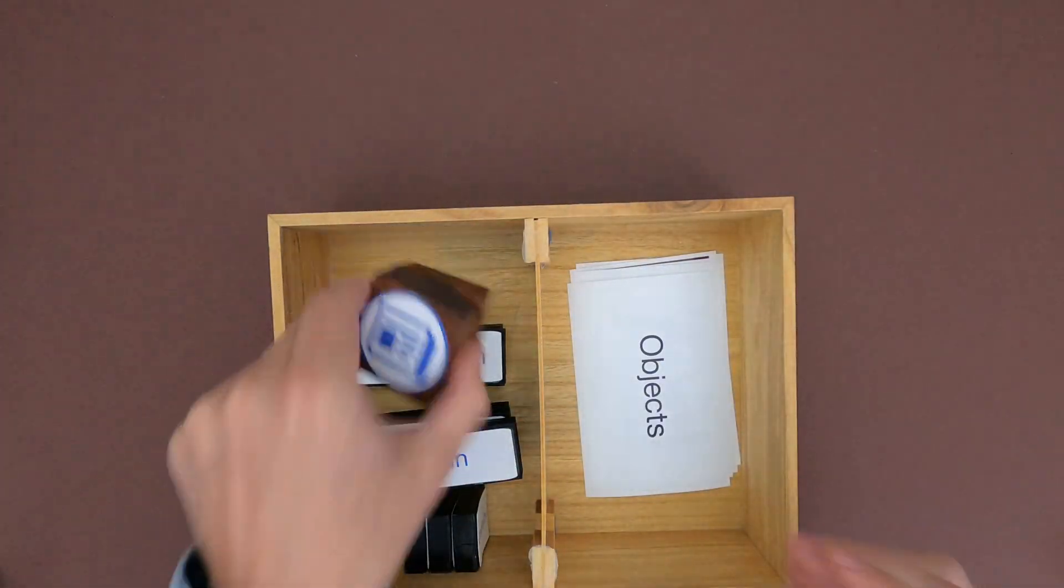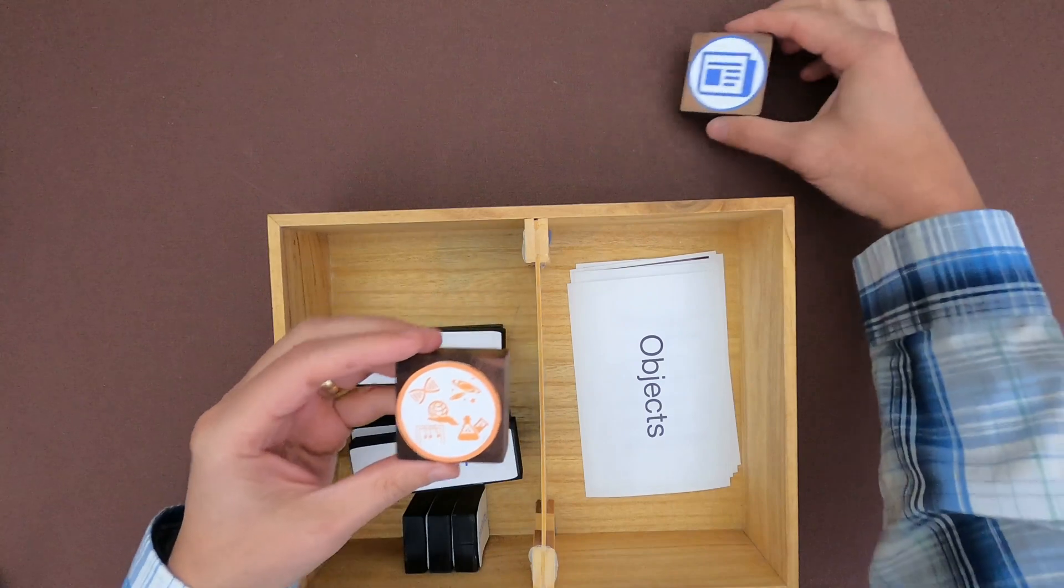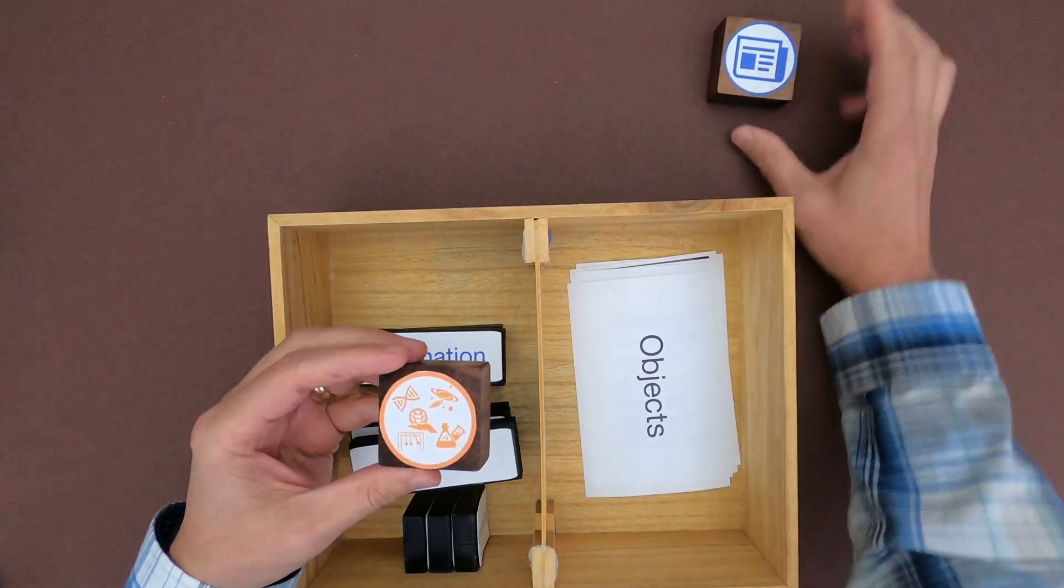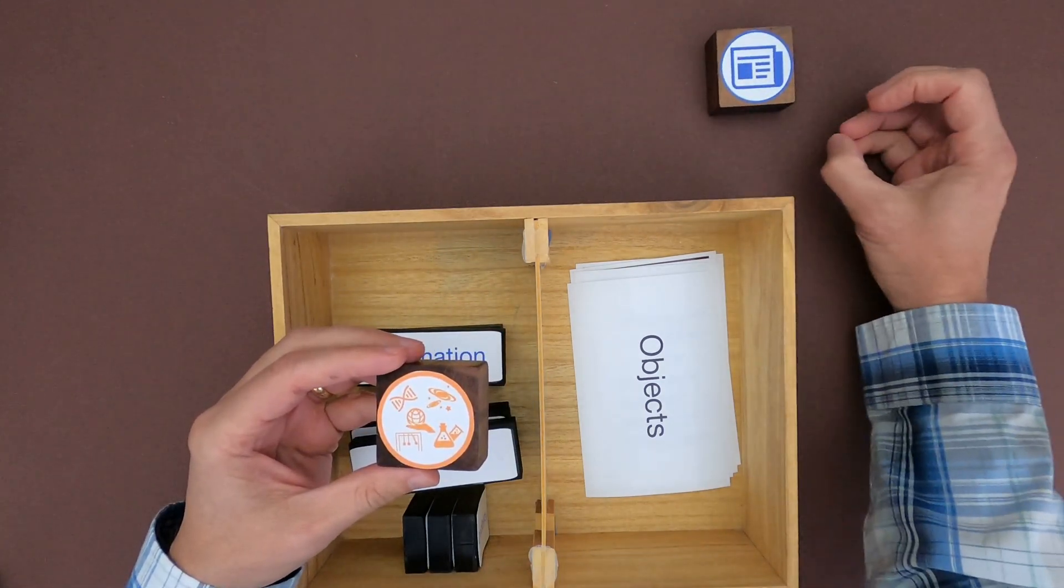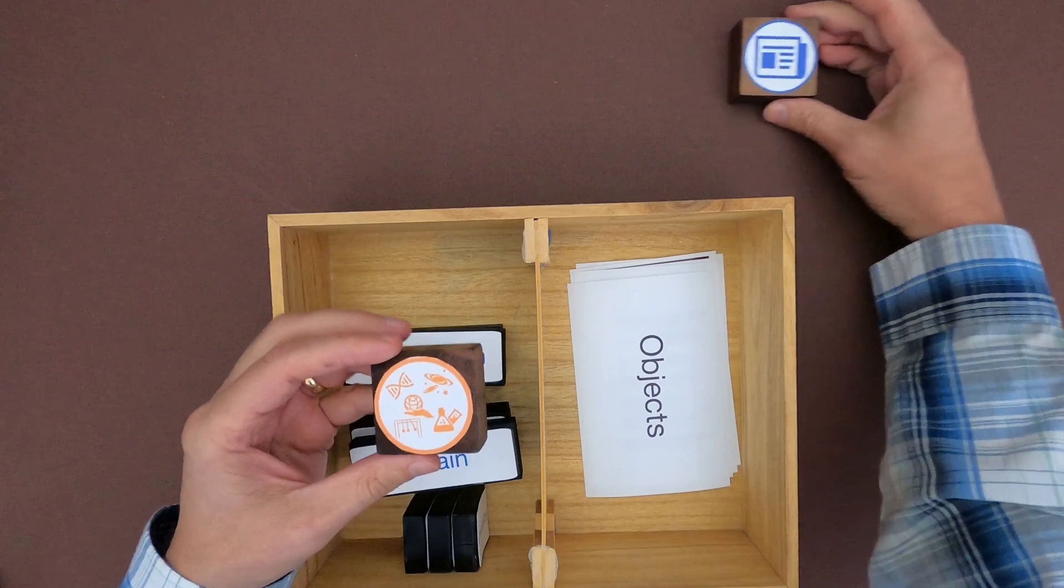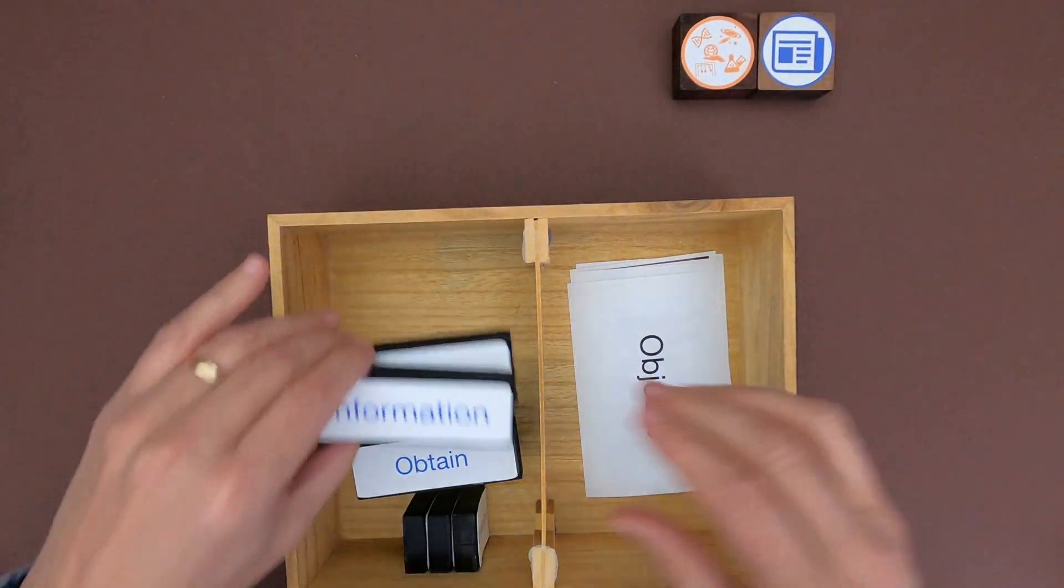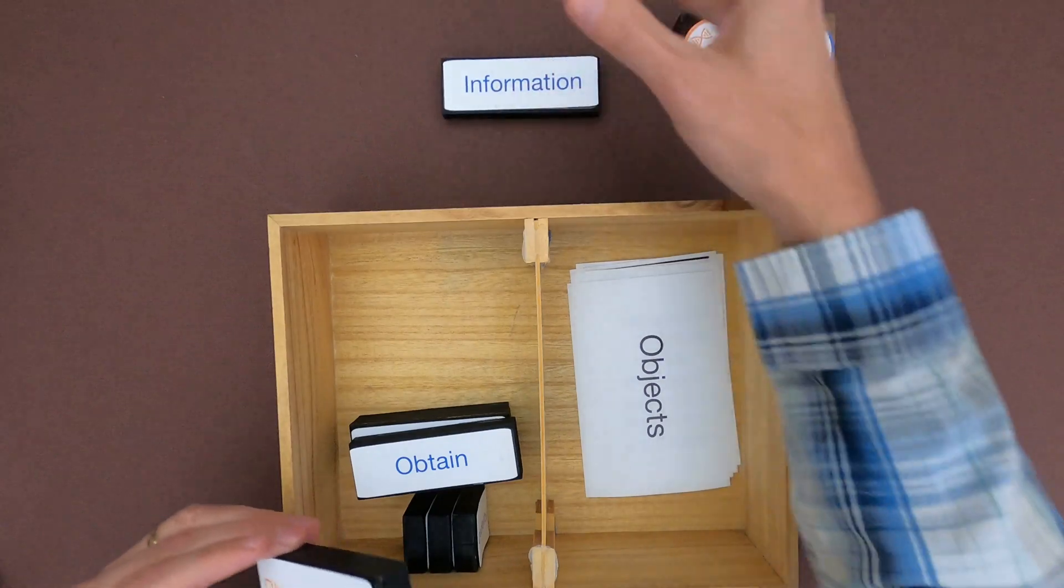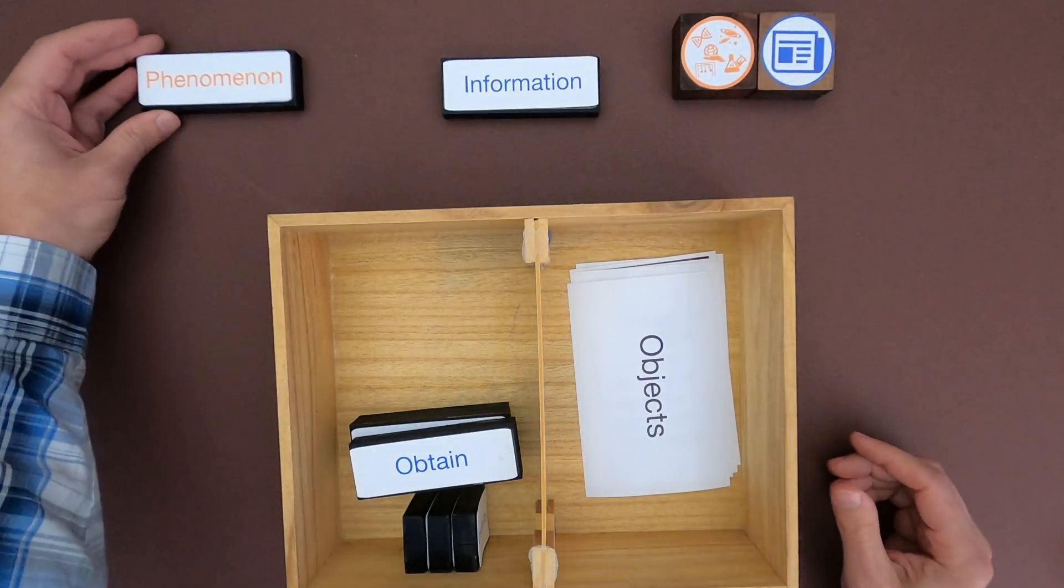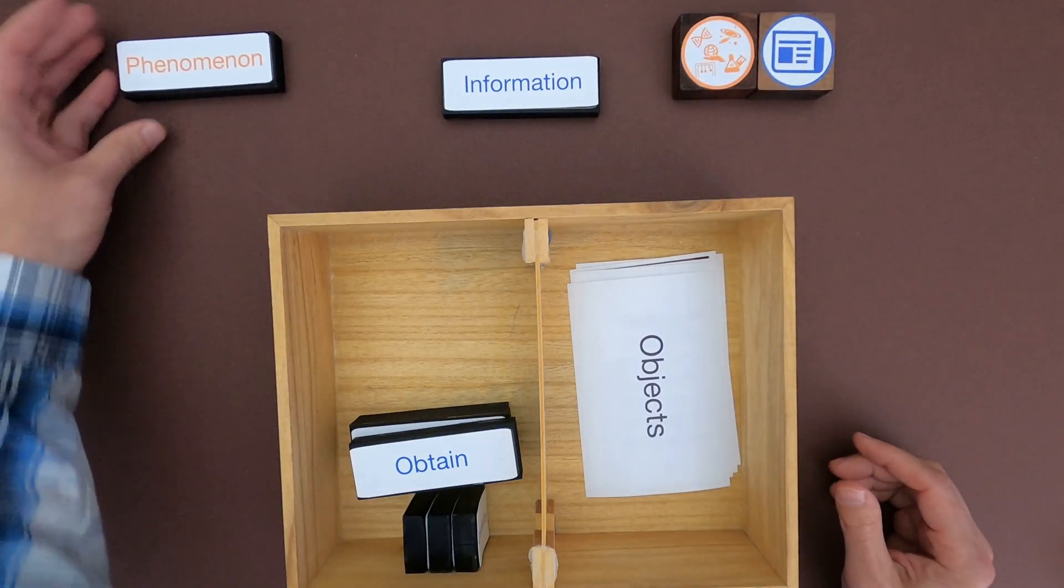When you're integrating information, what you're doing is taking a number of different sources of information and bringing those together, making sure that we communicate information that's credible. But it should always be aligned to some kind of a phenomena. First thing you should always do is define the phenomena that you're trying to better understand.